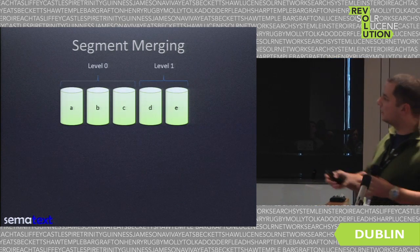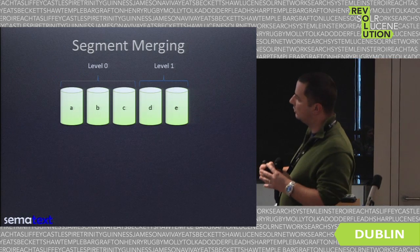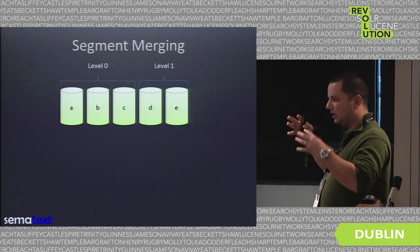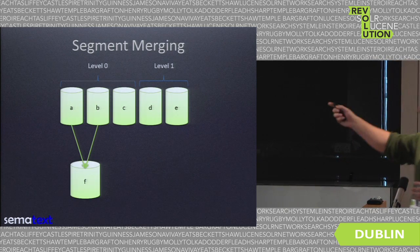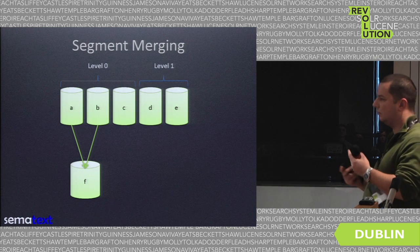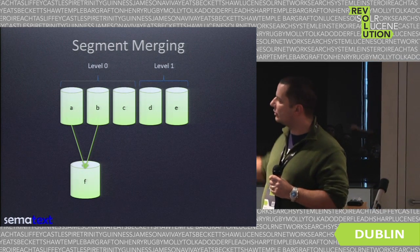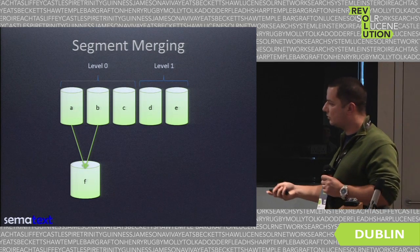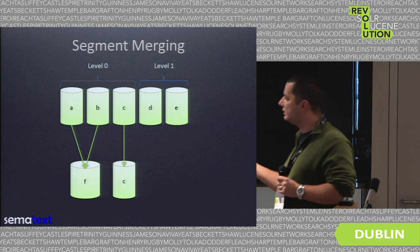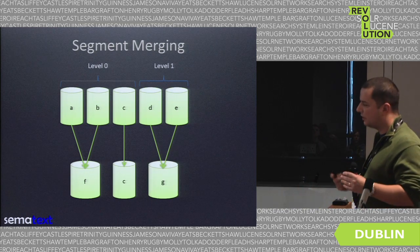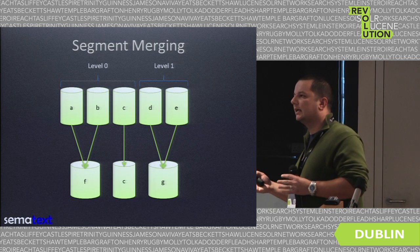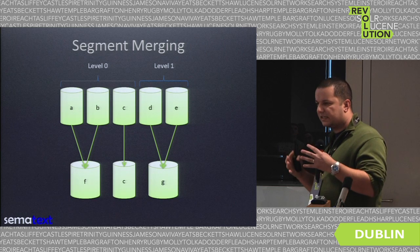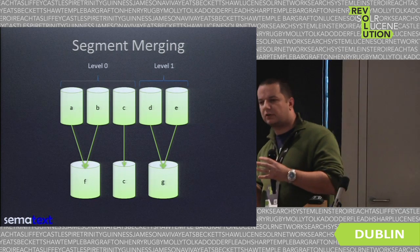How segment merging works: segments are divided into levels, and the merge policy chooses which segments are candidates to merge. Based on the merge factor and the merge policy, Lucene chooses — for example in a simplified view — segments A and B will be merged and rewritten to a segment called F, C will be left, and E will again be merged. From many segments, fewer are created.